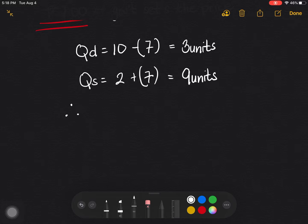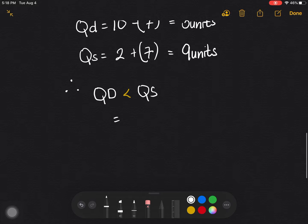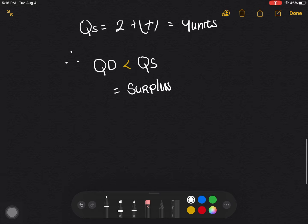So therefore, we can say that given that QD is less than QS, we can say that we are experiencing surplus.